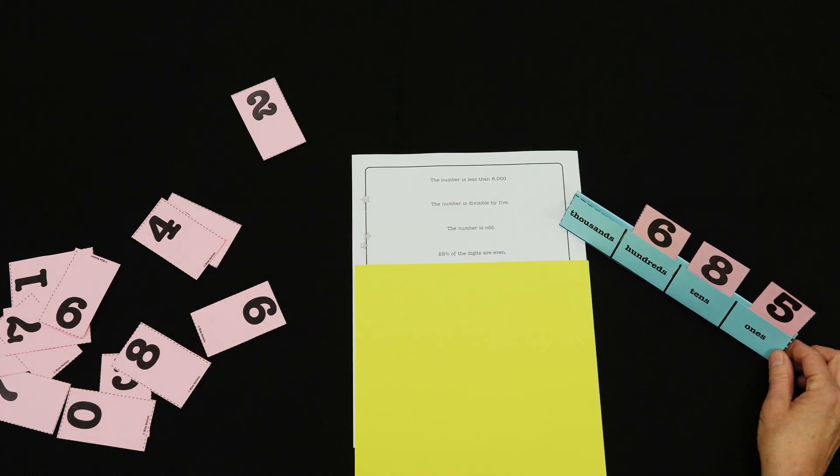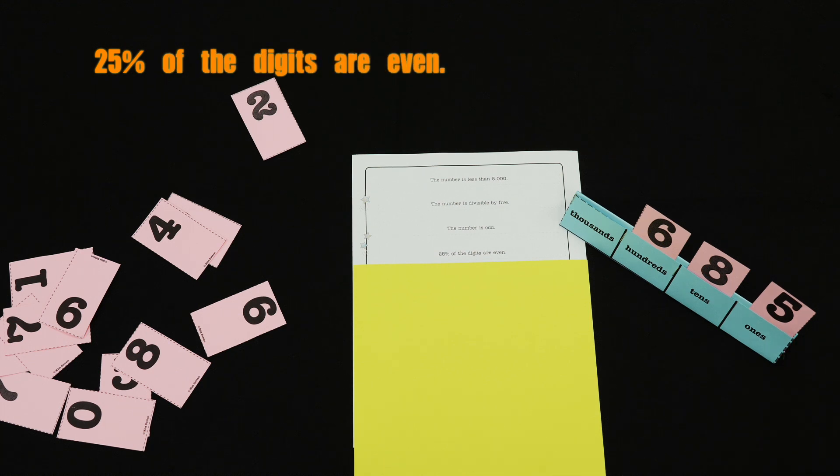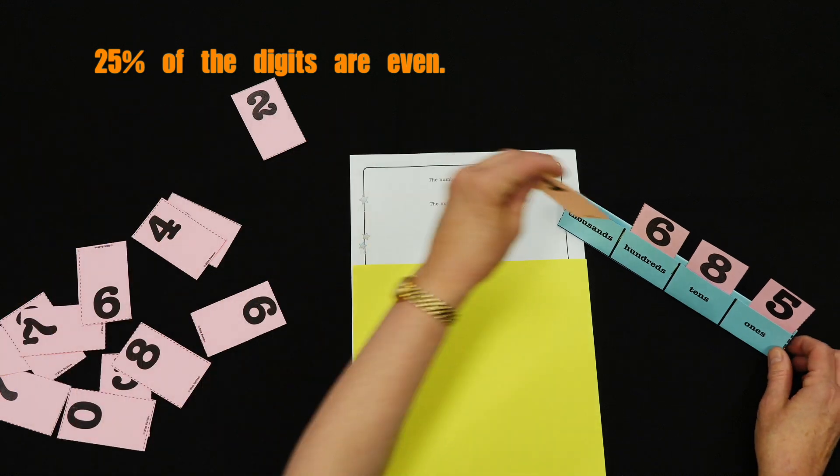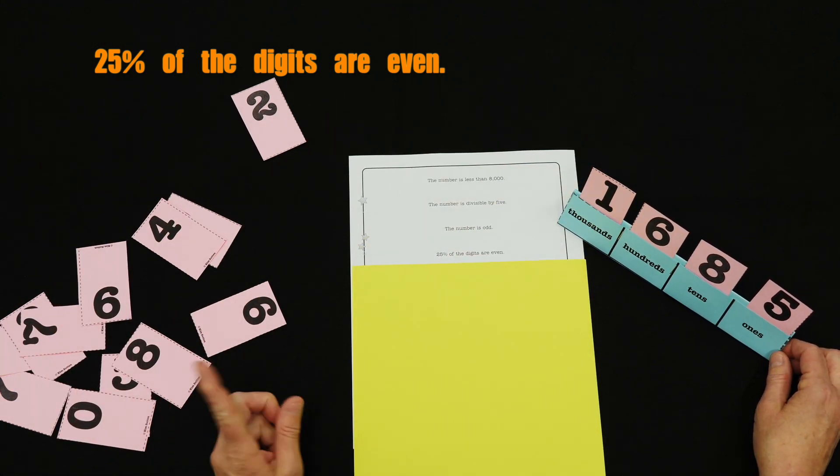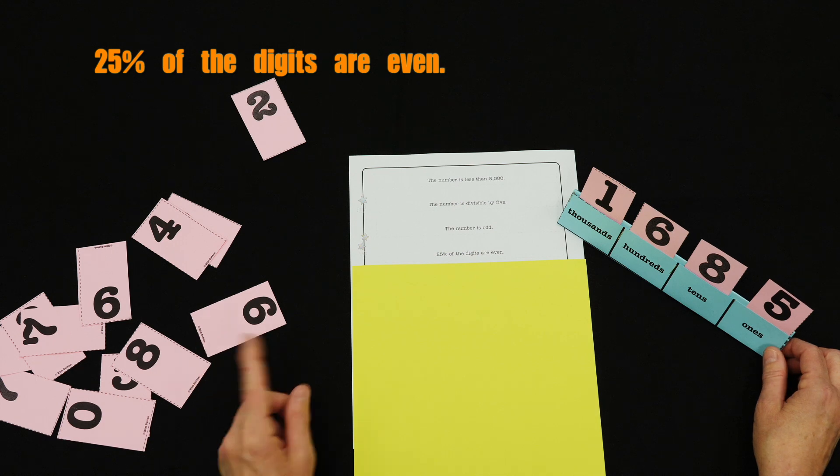Next clue is given: 25% of the digits are even. Child has to think, oh, that would mean one out of four. I know I have a four digit number, I've got to make a change. So I might be thinking, I'll make a four digit number, but I only have one even digit, so I've got to make another change.